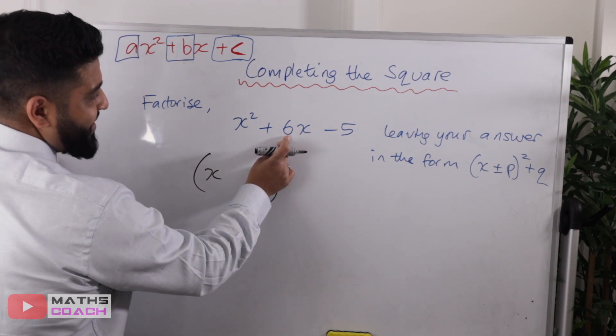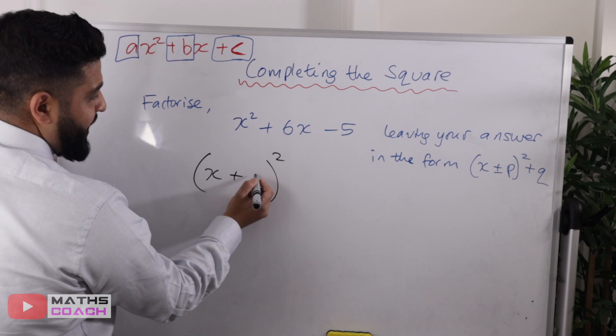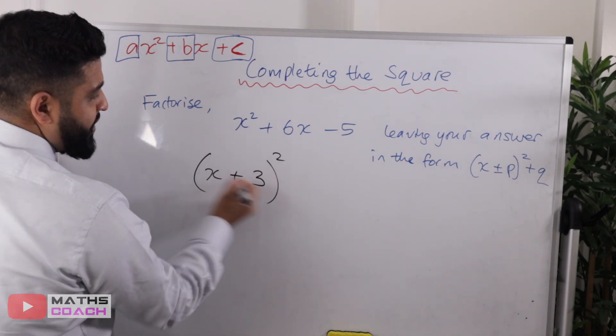The coefficient of b here is six, positive six. I divide that by two, so I get six divided by two, which is three.